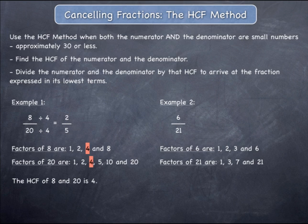Likewise, the factors of 21 are 1, 3, 7 and 21. The highest common factor of 6 and 21 is the largest number that is common to both lists. In this case it is 3.